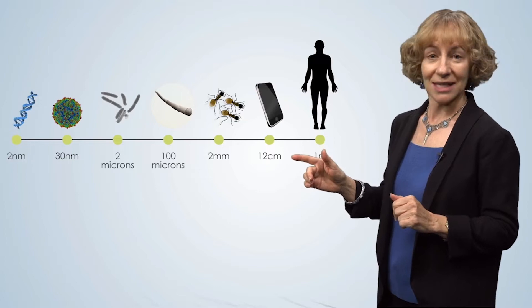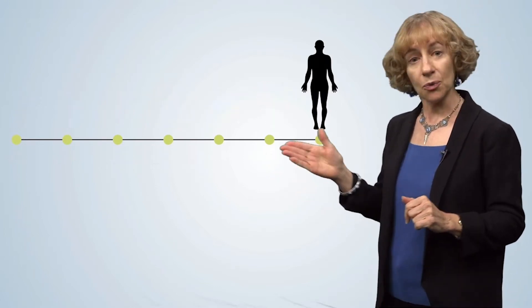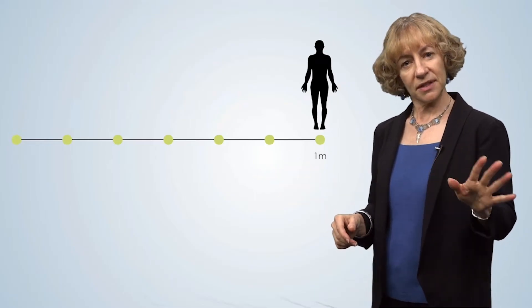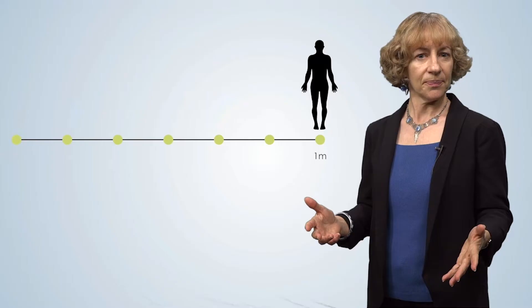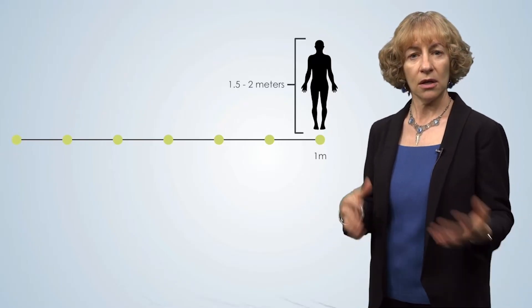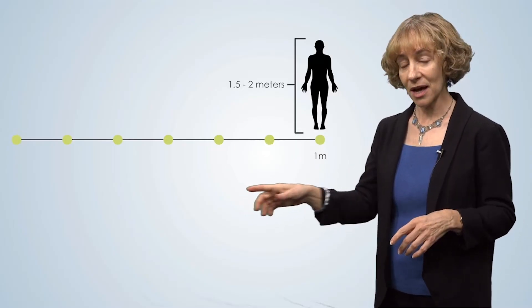This scale bar gives you an idea of the size of different objects in our world. First, at the right side of the scale bar is the one meter mark. At this size we have, for example, a human. The average adult human is about one and a half meters tall on the short side, that's me, to nearly two meters tall on the tall side.